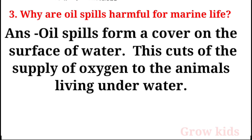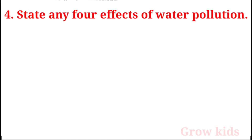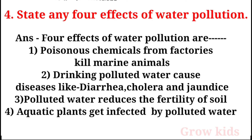Answer: Oil spills form a cover on the surface of water, which cuts off the supply of oxygen for animals living underwater. Question 4: State any four effects of water pollution. First, poisonous chemicals from factories kill marine animals. Second, drinking polluted water causes diseases like diarrhea, cholera and jaundice. Third, polluted water reduces the fertility of soil. Fourth, aquatic plants get infected by polluted water.